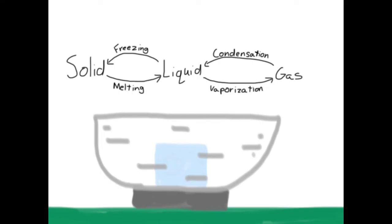So hopefully now you know that going from a solid to a liquid is melting, liquid to a gas is vaporization, going from gas to liquid is condensation, and liquid going to solid is freezing. Thank you for watching.